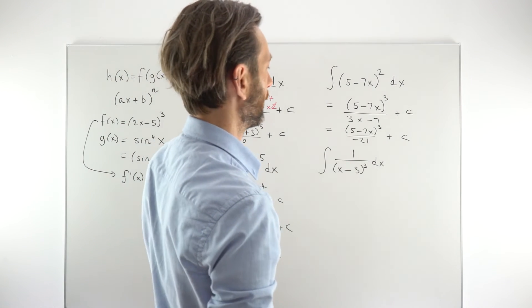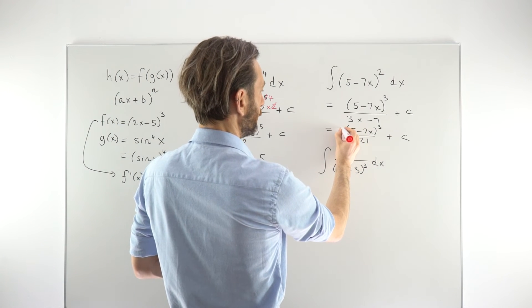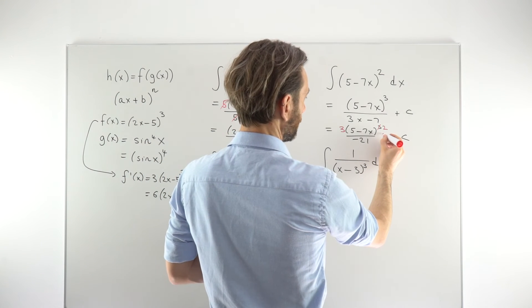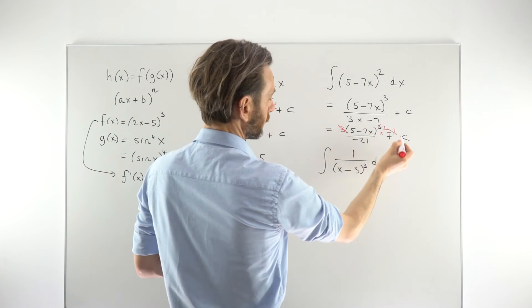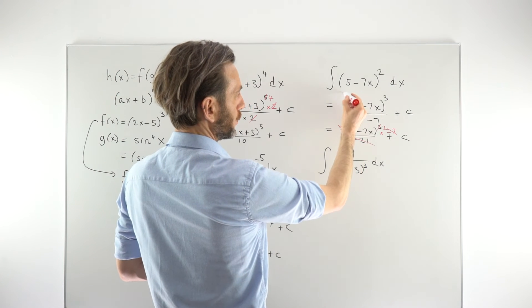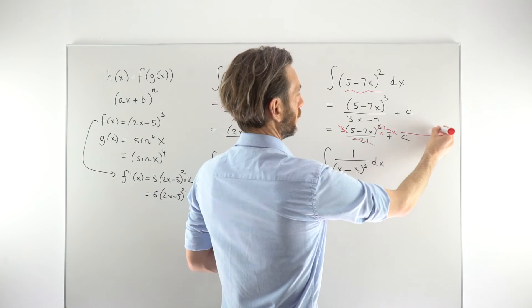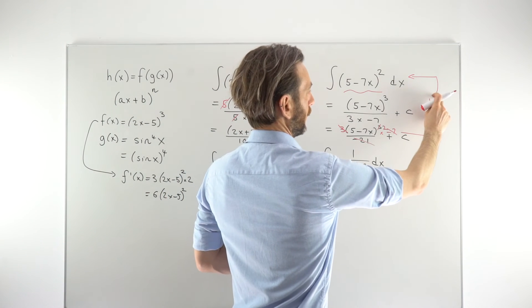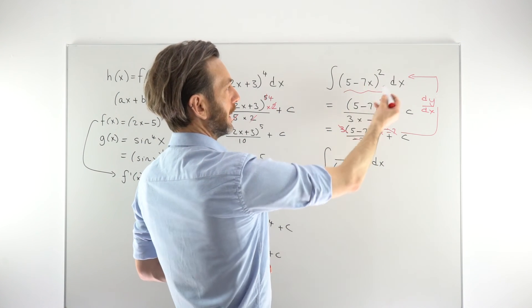You can always test it by asking: if I differentiate this, where would that take me? Multiply by the power, bringing the 3 forward; reduce the power by 1; then multiply by the derivative of the inside, which is minus 7. Three times minus 7 is minus 21, which cancels with the denominator, leaving us with (5 minus 7x) to the power of 2 — back where we started. That's how you test your integral by taking the answer and running it through the derivative.